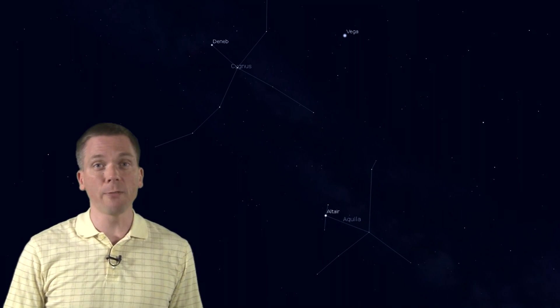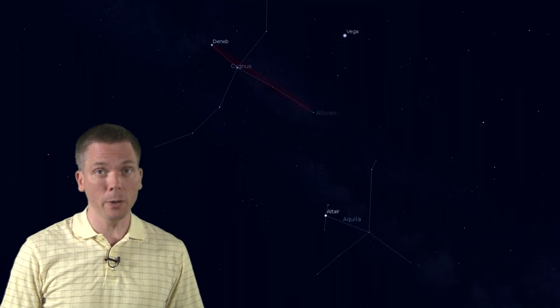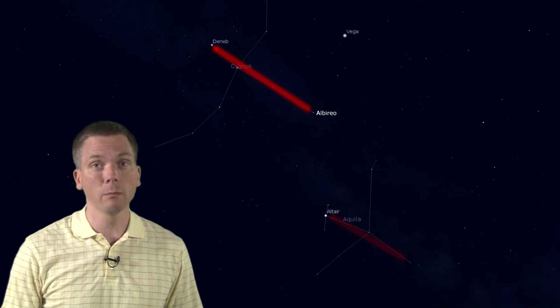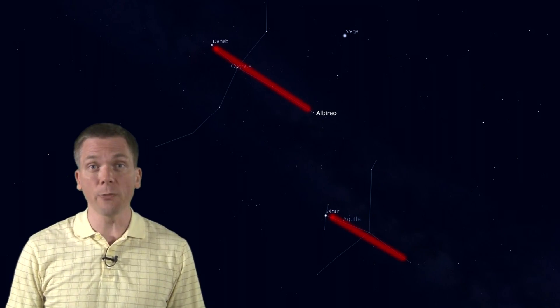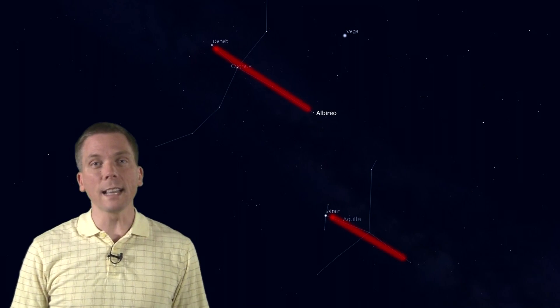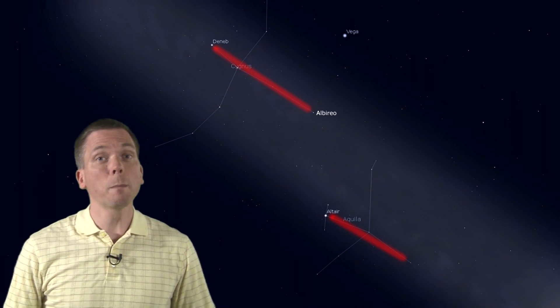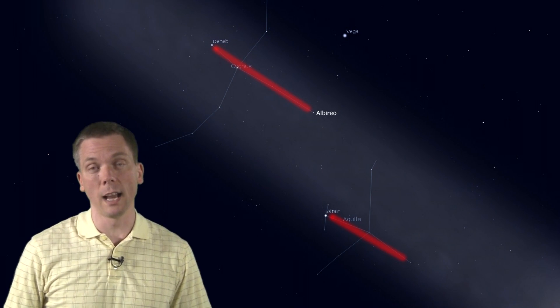The line made by first magnitude Deneb to Alberio in Cygnus follows a similar line in Aquila from Altair, which is at the beak, and towards the tail feathers of the eagle. A couple points here, one is that the Milky Way, sadly unseen by many of us here on Earth, runs parallel between these two lines.